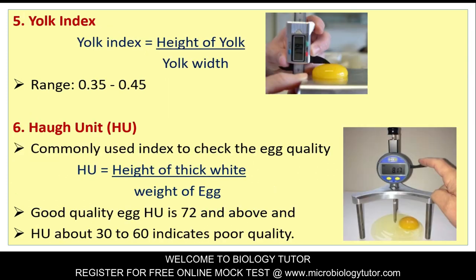Yolk index: Yolk index is calculated as the height of the yolk divided by the yolk width. The usual range is 0.35 to 0.45.